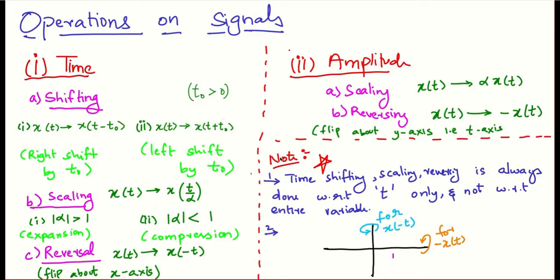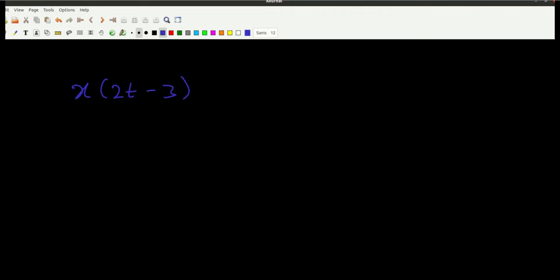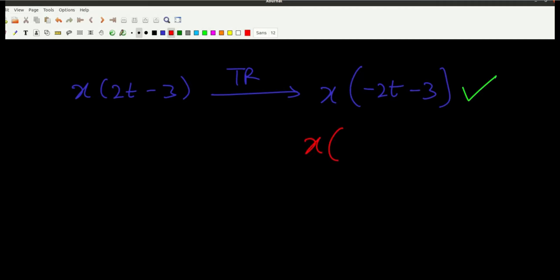An important note: time shifting, scaling, and reversing is always done with respect to t only, and not with respect to the entire variable. So if x(t) is to be time reversed, we need to replace t by minus t — we get x(-t). This is correct. You don't have to apply the minus sign to the entire variable. All you need to do is just replace t by minus t. This is incorrect; this is correct.